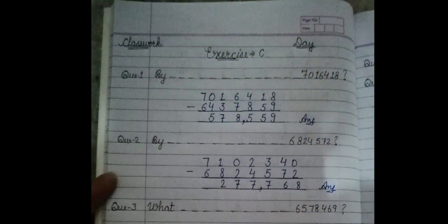So here we have the first question: by how much is this term less than this given term? First of all, you will have to read this number with the help of place value chart. Read this number 64,37,859, and the second term is 70,16,418. Simply, you can subtract this term, you will get your answer. This is simple minus.